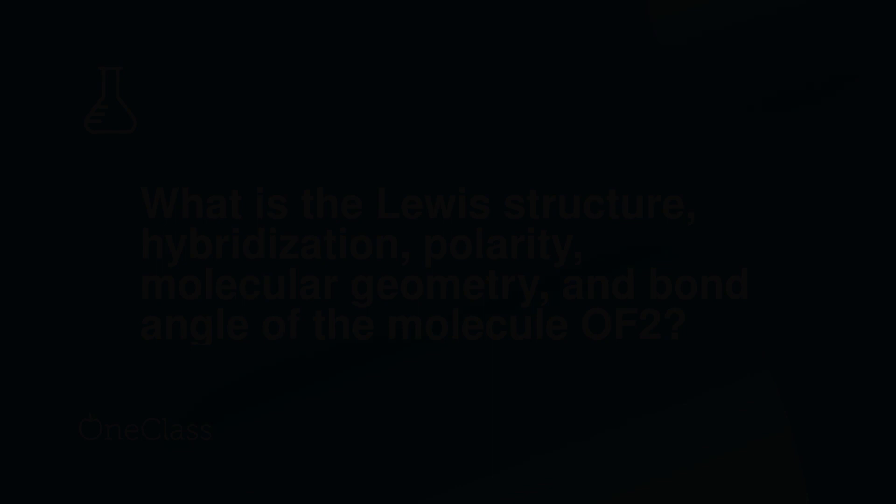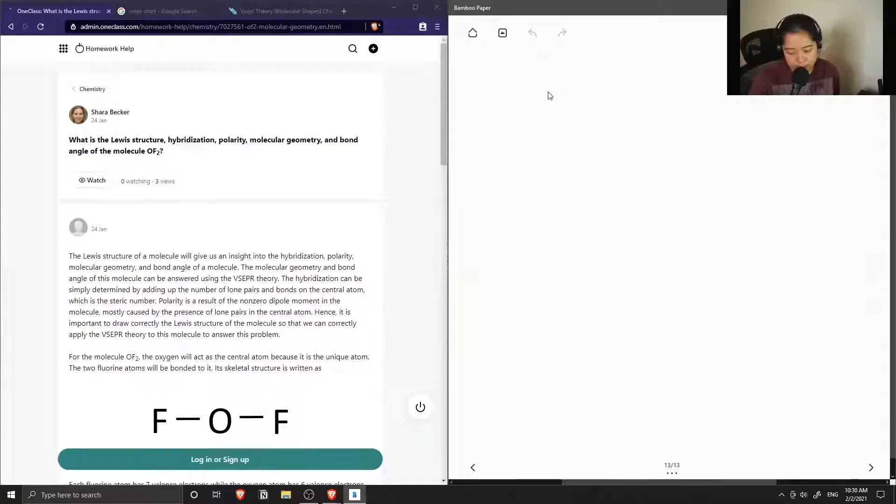Okay, so question number four says: what is the Lewis structure, hybridization, polarity, molecular geometry, and bond angle of oxygen difluoride? When writing out the Lewis structure, we first need to calculate the total number of valence electrons for the molecule.